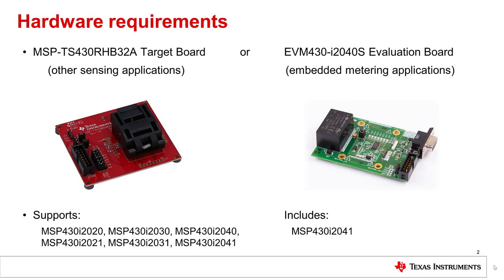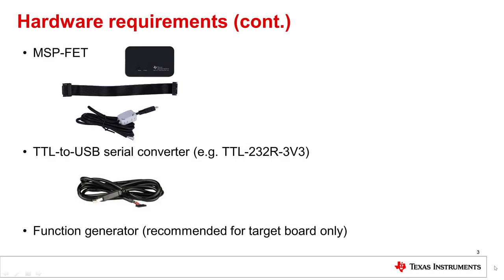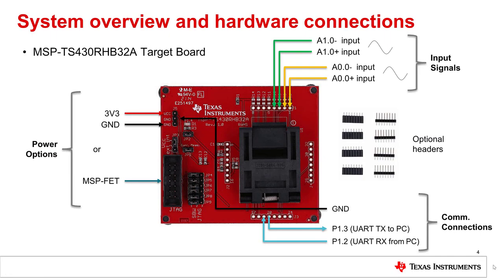Let's take a look at the hardware needed for this demo. Depending on your application, you will need the target board or the evaluation board to run the example code. The MSPFET is used to program the MCU with the example code. After programming, you will need a TTL to USB serial converter for enabling UART communication between the MCU and the GUI. Serial converters like this can handle the fast data transfer rate of 921600 baud, unlike the MSPFET's backchannel UART. A function generator is recommended for applying known signals to the target board.